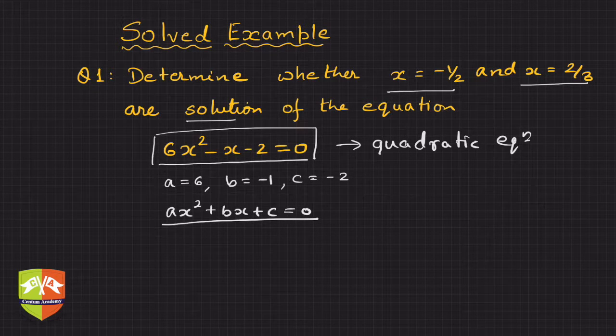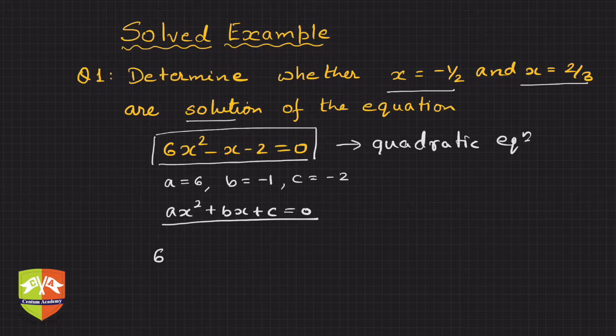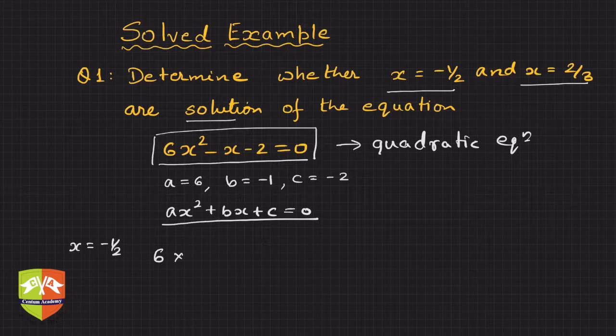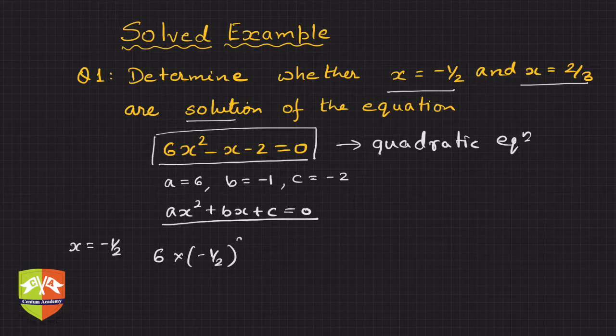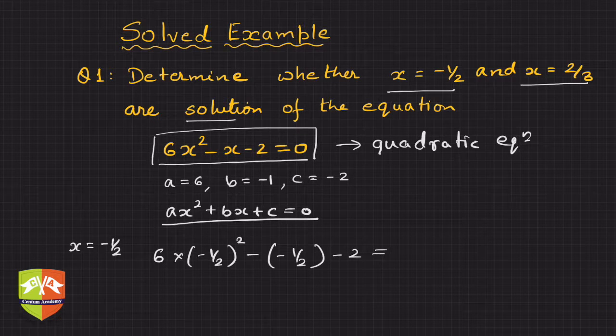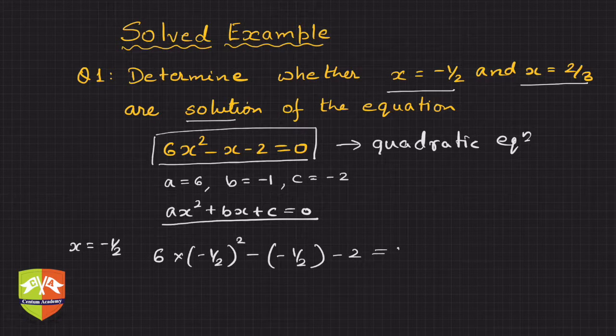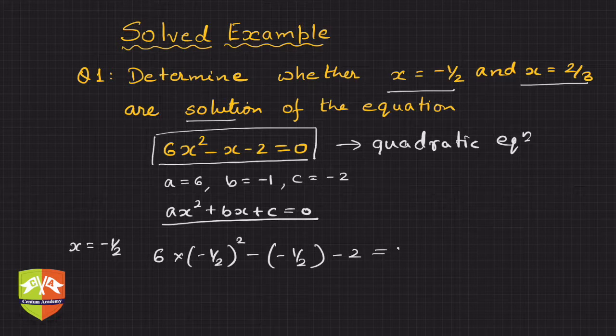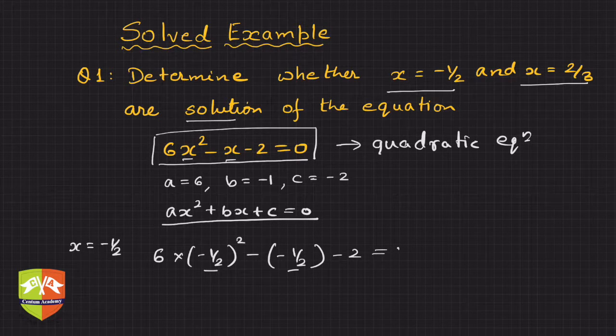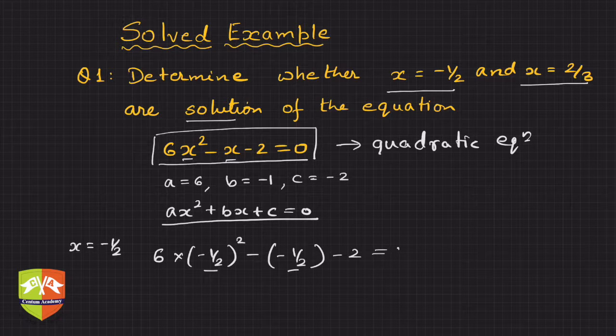Instead of x, we're plugging in -1/2. So x = -1/2: 6 × (-1/2)² - (-1/2) - 2 equals whatever we will check. Wherever there was an x, I have substituted -1/2. Now let's simplify.